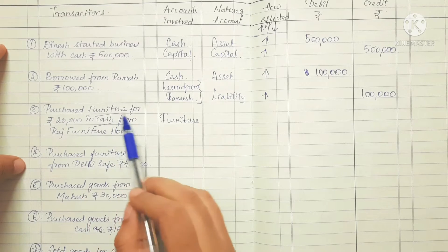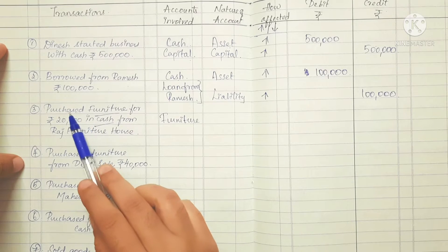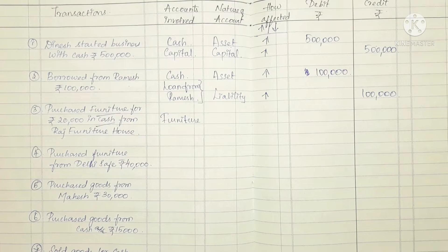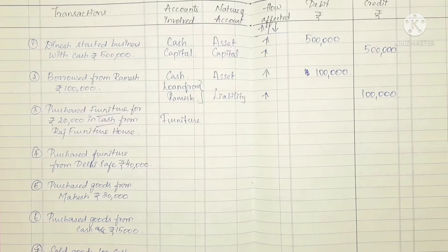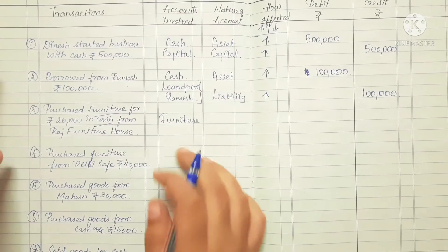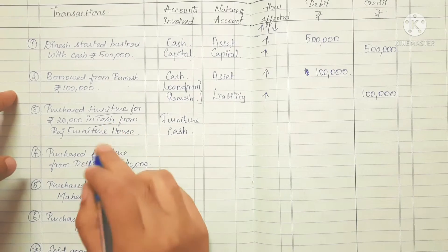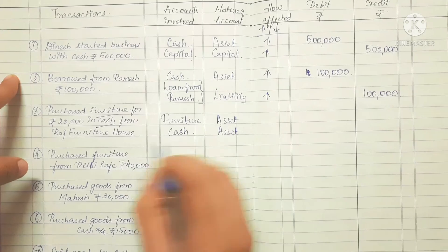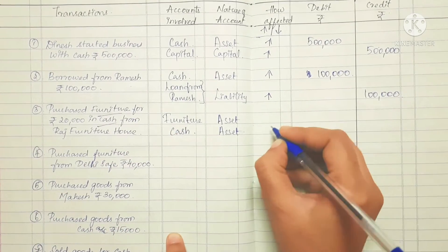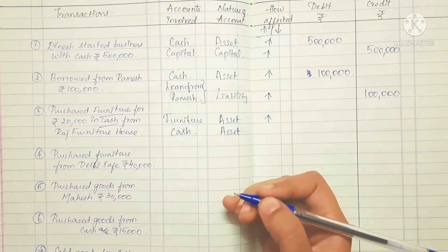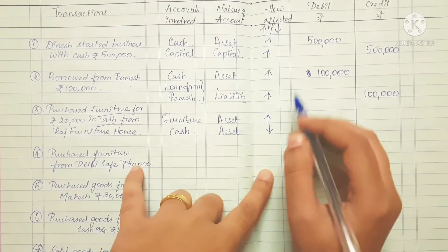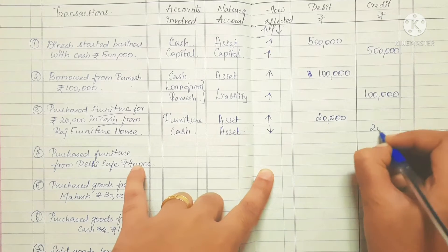Next transaction: purchase furniture for Rs. 20,000 in cash from Raj. The accounts involved are furniture and cash. Furniture is an asset — like computers, machinery, goods — all are assets. Cash is also an asset. Furniture increases, so we debit furniture. Cash goes out, so the asset decreases, and we credit cash. Simple.